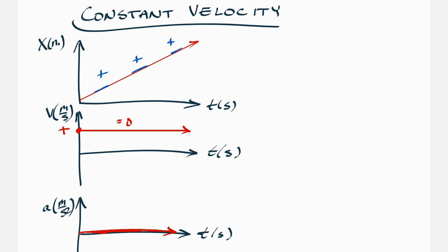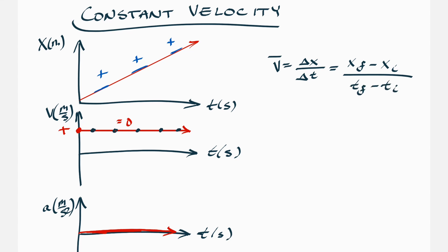Now, velocity equals delta x over delta t, and that's an average velocity — v-bar. For constant velocity motion, the average doesn't change because it's the same every single second. So that's x final minus x initial over t final minus t initial.